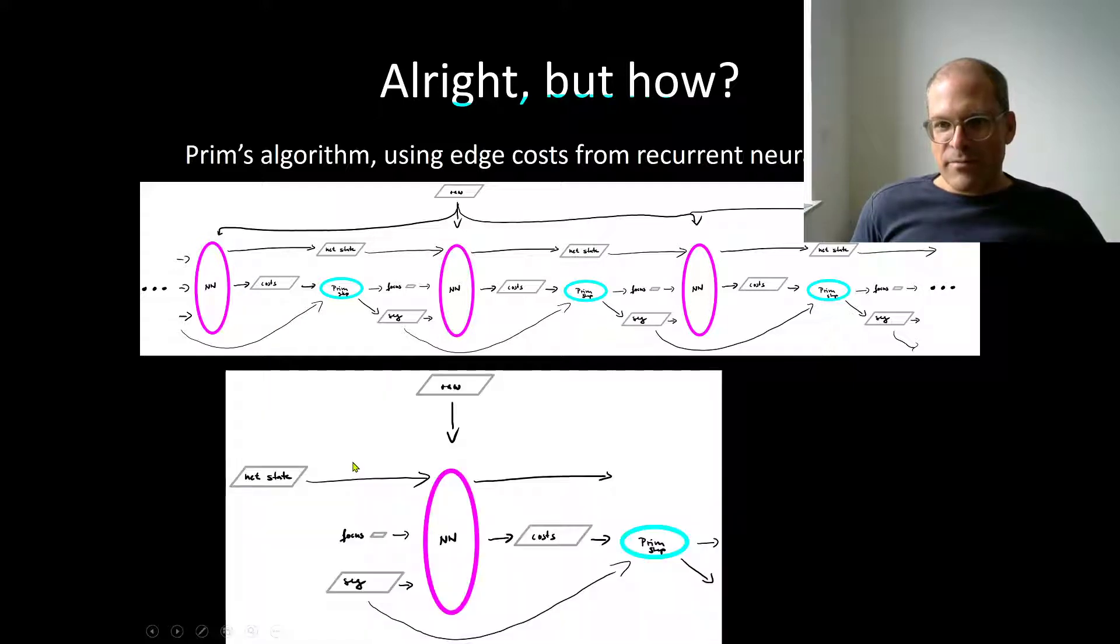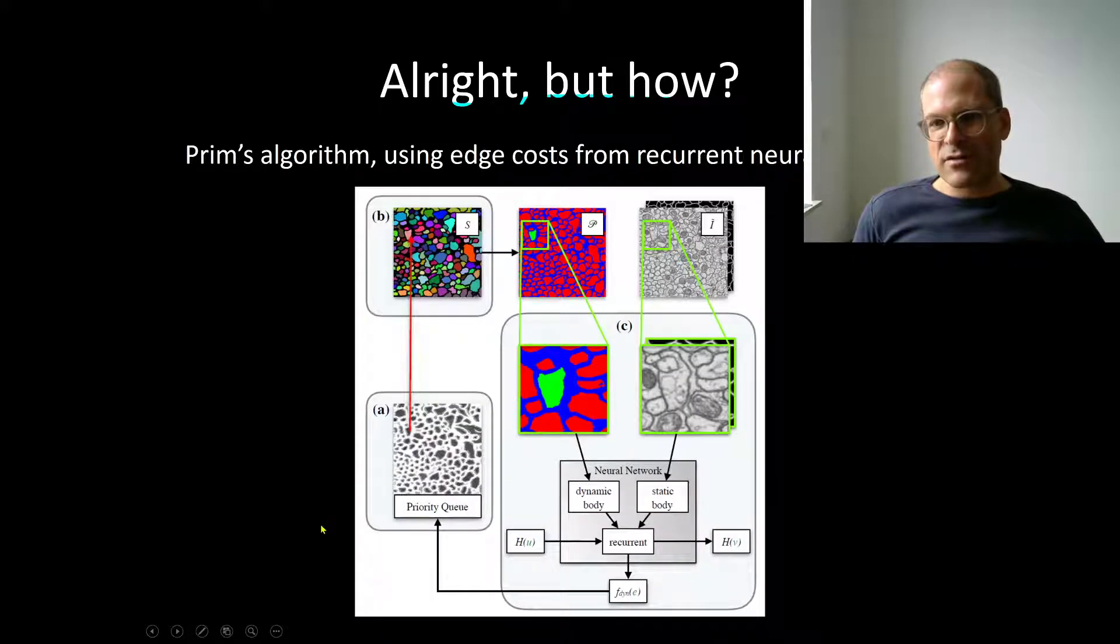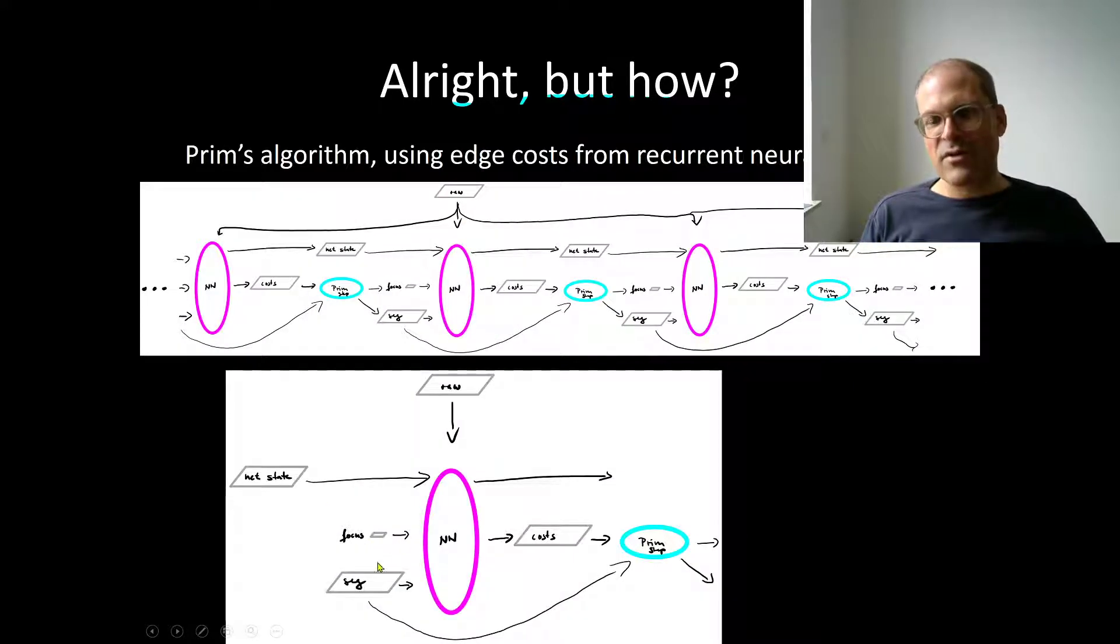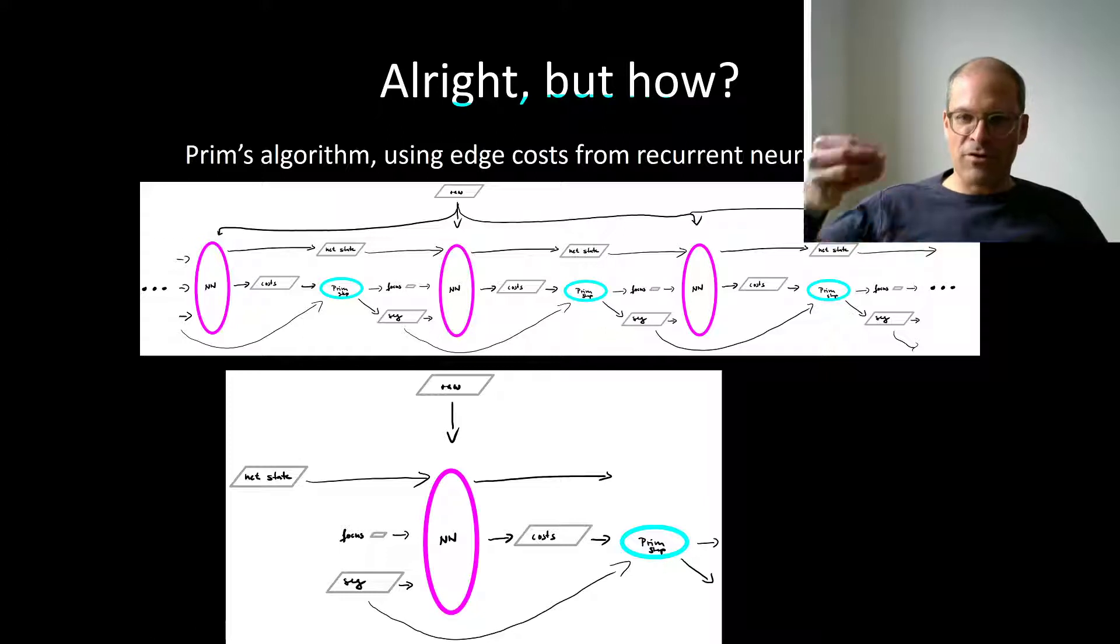Let me zoom in a little bit. The neural network gets the current segmentation. And it understands where to estimate edge costs next. It estimates costs for these newly accessible edges. And then a Prim step is being done. So my region is grown by one node. And then the new edges become accessible for which a neural network again estimates costs and so on. So you can unroll this such that it looks like a recurrent neural network.